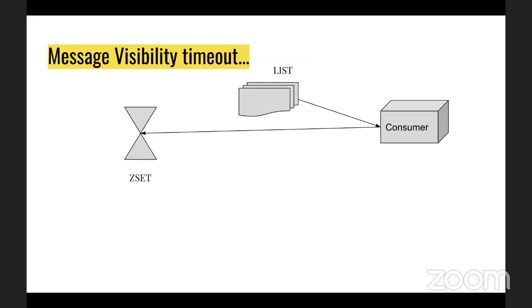Your system now has a ZSet plus a List: the consumer takes an element from the List and also puts it into a processing ZSet for visibility timeout tracking. Since messages can arrive at different times with different visibility timeouts, ordering is needed. The problem of atomicity reappears — you're consuming from the List and adding to the ZSet; if you crash in between, the message is lost again.